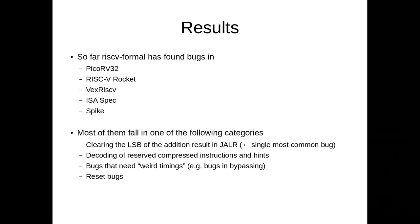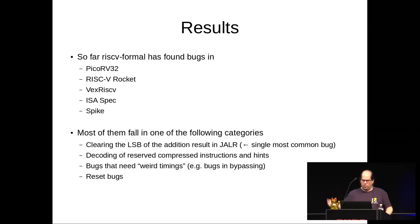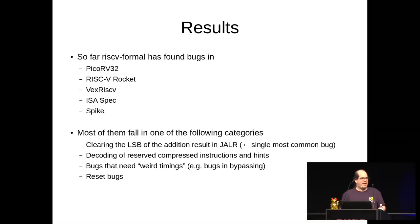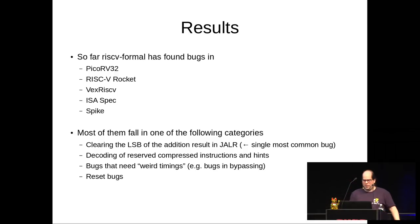Results: I found bugs in pretty much every implementation I looked at - bugs in all three supported processors. We also found bugs in Spike, which is the official C implementation of RISC-V. I found a way to formally verify my specification against Spike, and in some cases where I found a difference between my specification and Spike, it turned out to be an actual bug in the English language specification. So RISC-V Formal also found bugs in the English language ISA specification.